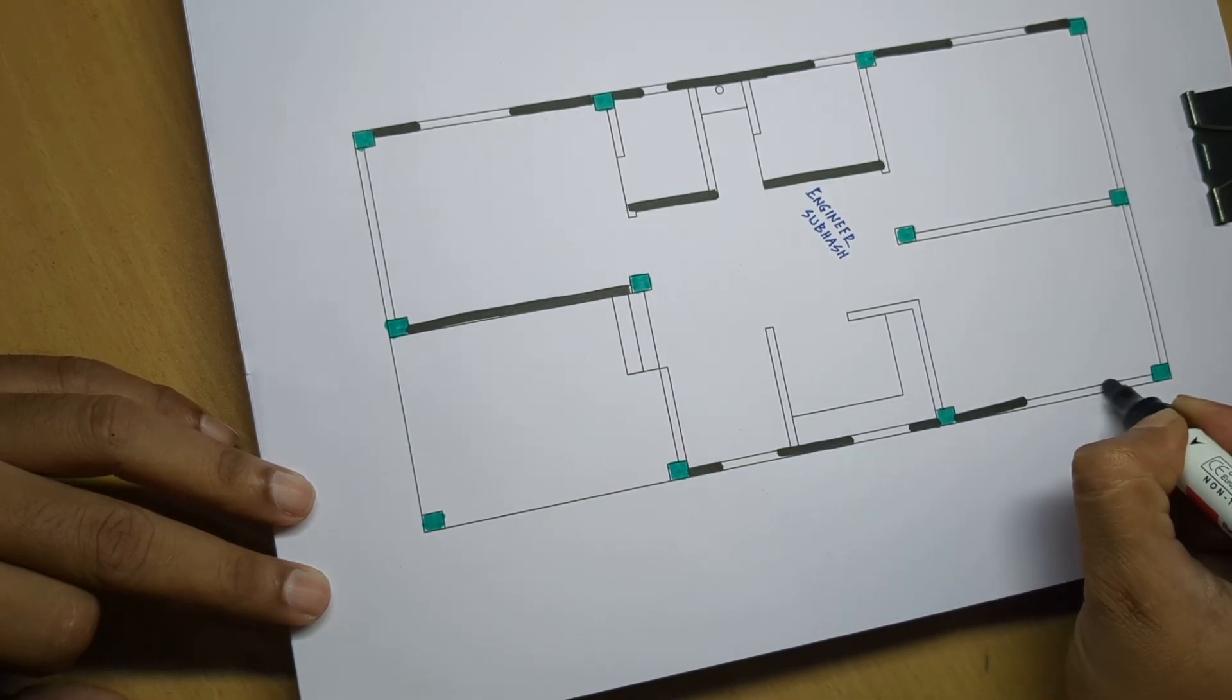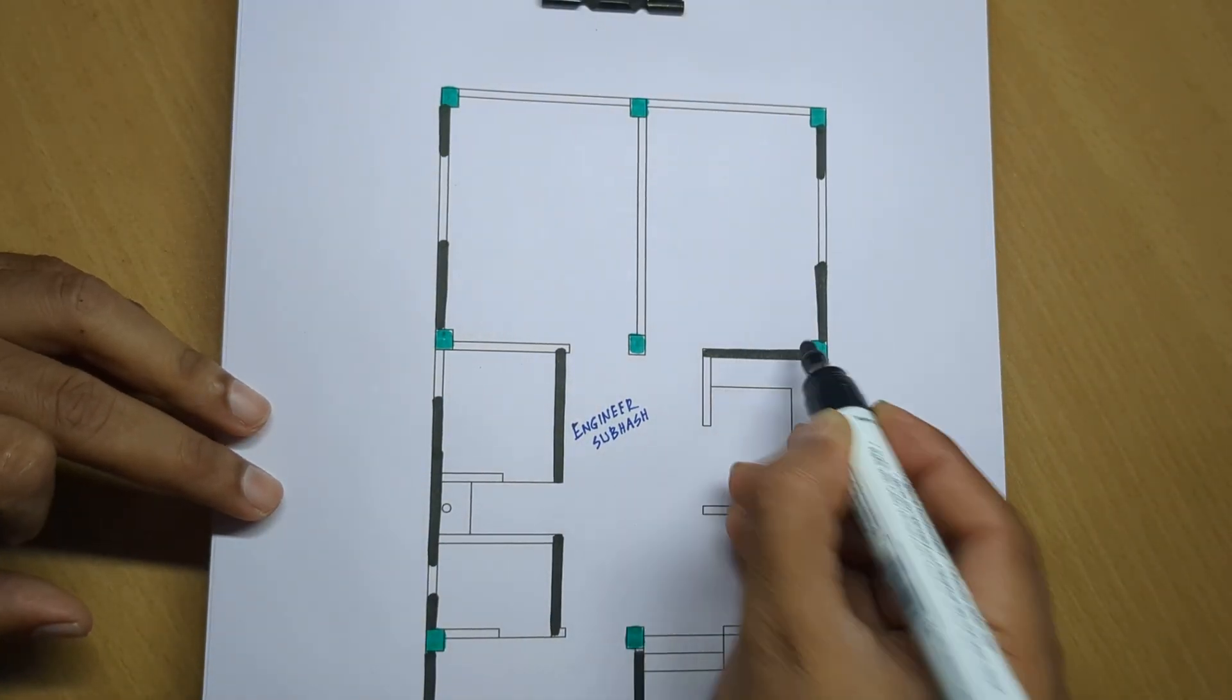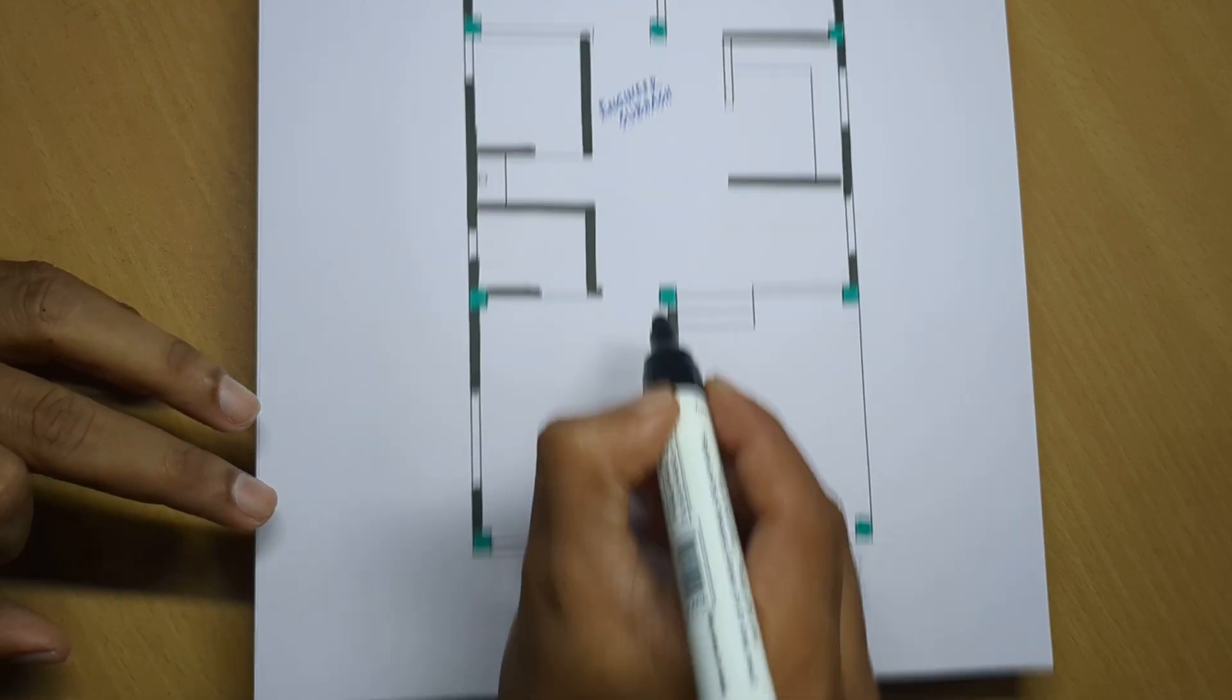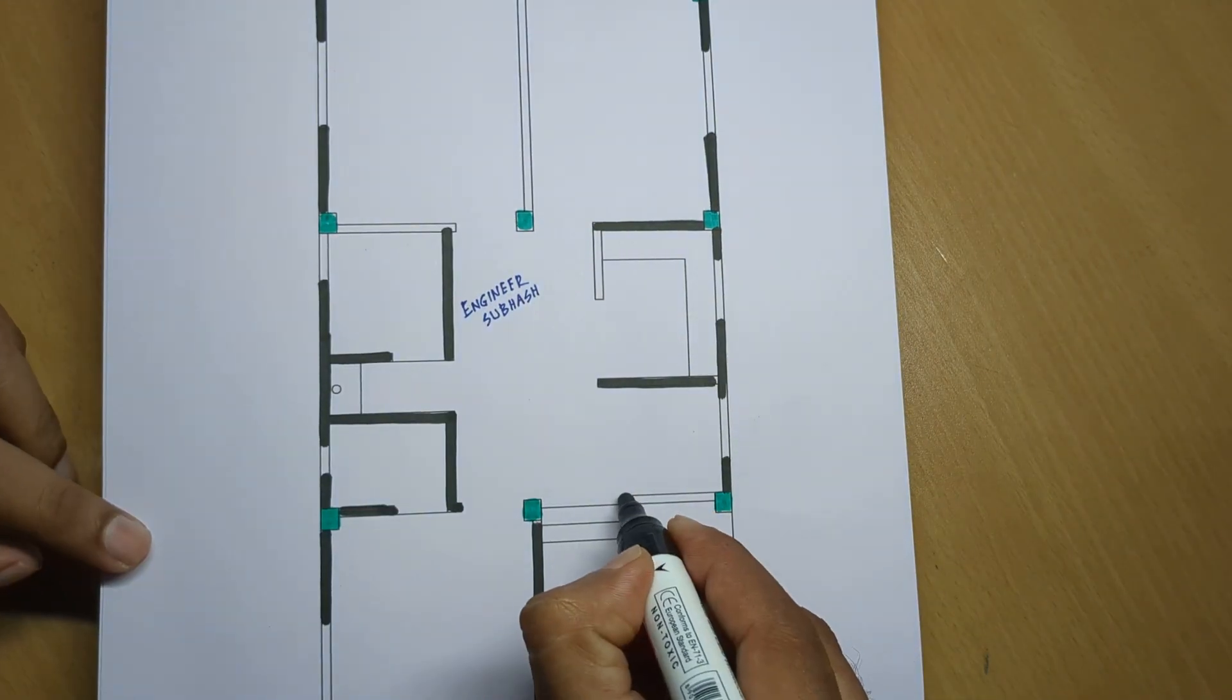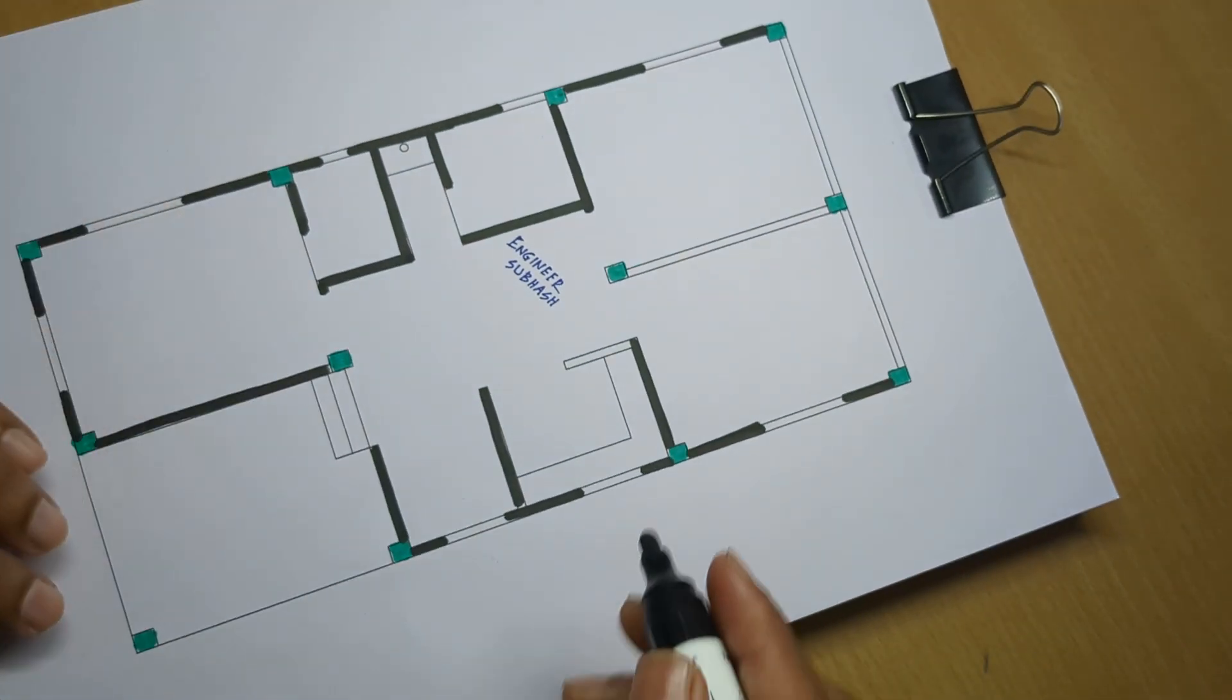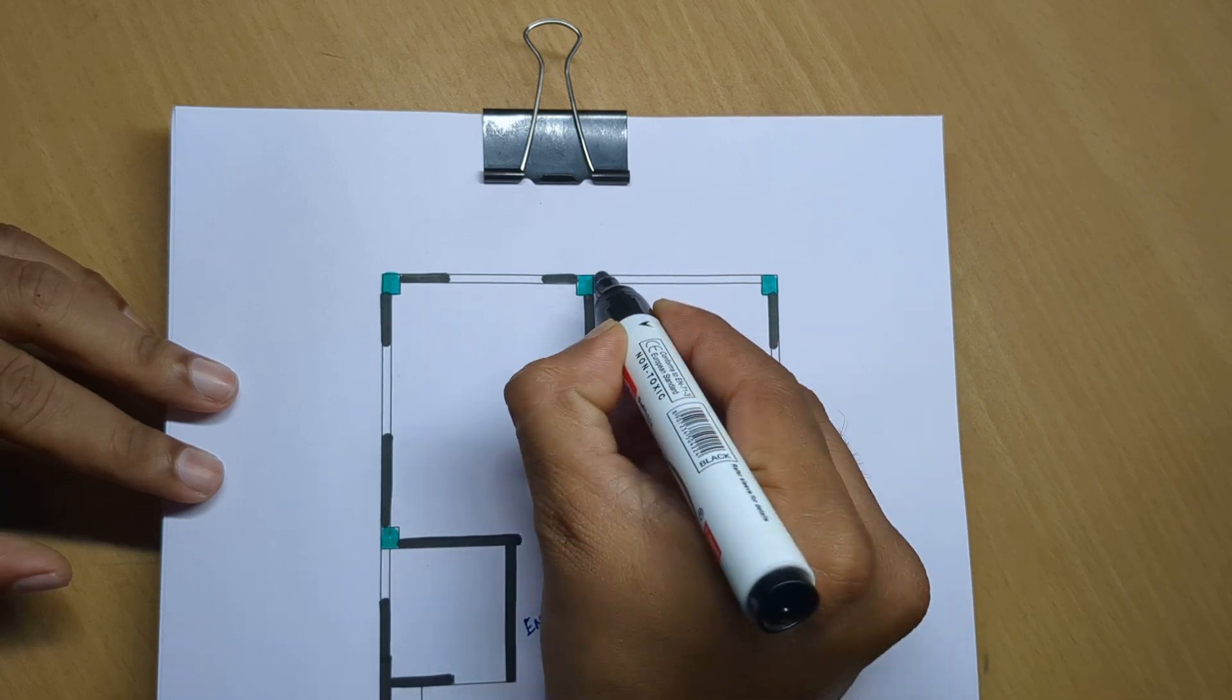Wall के साथ, outside inside में wall create करने के बाद, outside में इसका window, partition wall. 125 mm. Beats by Challis का house plan design.